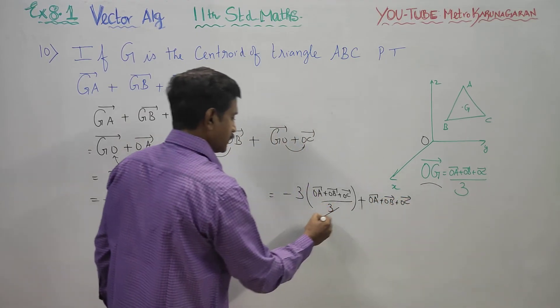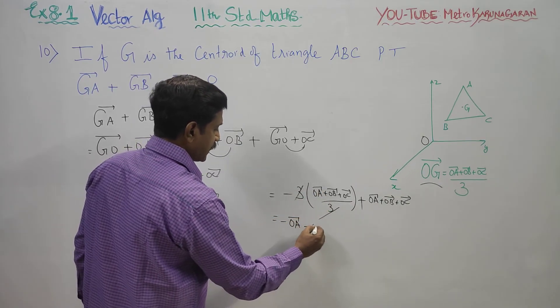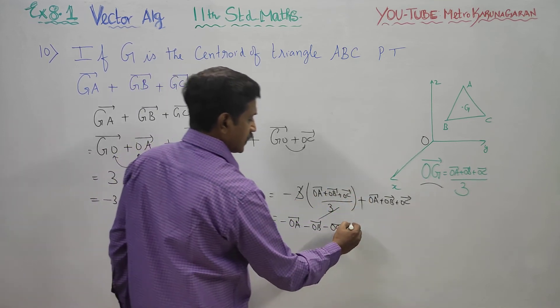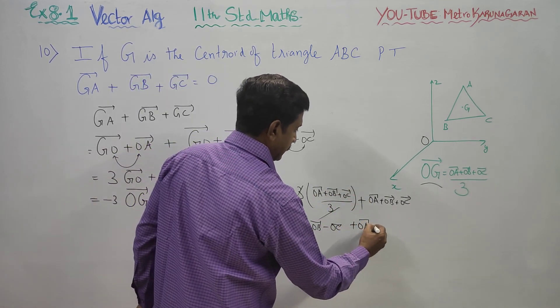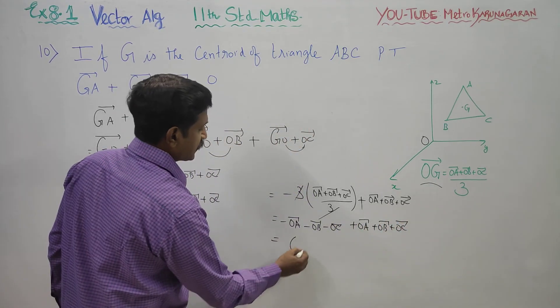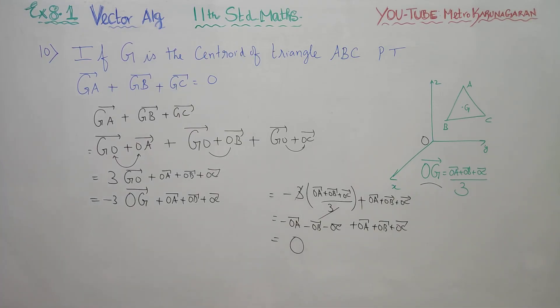The 3s cancel. This gives minus OA vector minus OB vector minus OC vector plus OA vector plus OB vector plus OC vector. All terms cancel, giving 0, which equals the right-hand side.